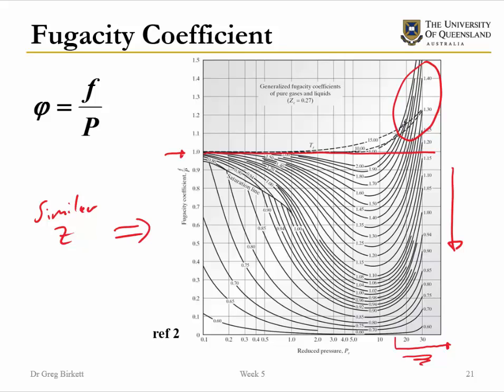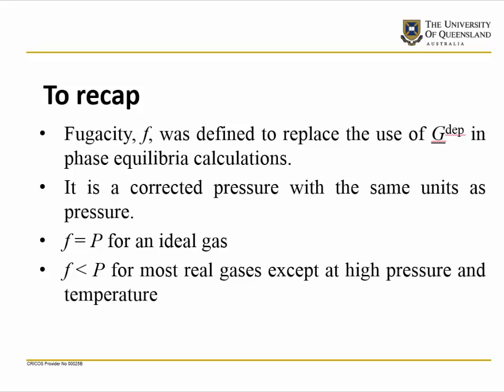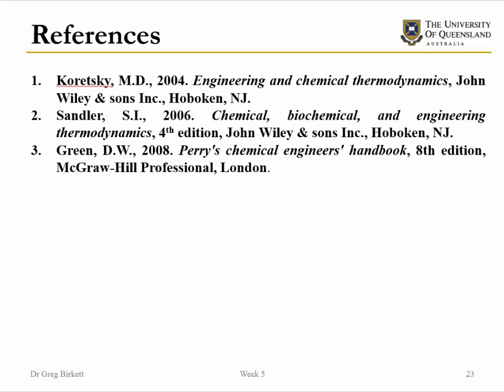To recap: we have defined fugacity to replace the use of the departure Gibbs free energy in phase equilibrium calculations, because the magnitude of the departure Gibbs free energy is uncertain, whereas fugacity is in pascals and should be in the ballpark of the pressure of interest — it is a corrected pressure with the same units as pressure. For an ideal gas, fugacity equals pressure. For real gases moving away from ideal behavior, the fugacity will generally be less than the pressure, except at very high pressure and relatively high temperature. That is all for today, thanks for your attention.